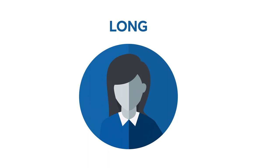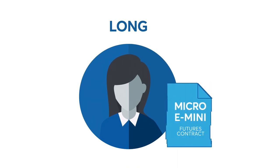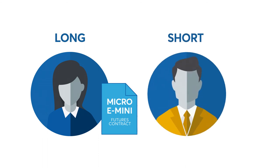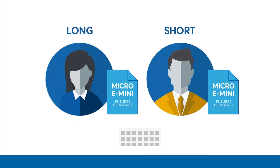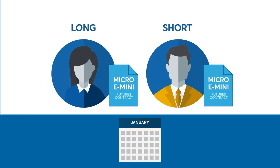Long holders will automatically receive the respective Micro E-Mini futures contracts upon expiration. Short holders of in-the-money options will automatically be assigned the opposing position by the clearinghouse. Because the underlying futures contract expires at a later date, both long and short positions that expire in the money will generate exposure to the futures market.